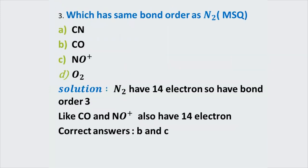Now there is an MSQ: which has the same bond order as N₂? Options are CN⁻, CO, NO⁺, and O₂. N₂ has 14 electrons so bond order is 3. Calculating electrons: CN⁻ has 13 electrons, CO has 14 electrons, NO⁺ has 14 electrons, O₂ has 16 electrons. For options CO and NO⁺ we get 14 electrons, so they have the same bond order as N₂, which is 3. The correct answers are CO and NO⁺.